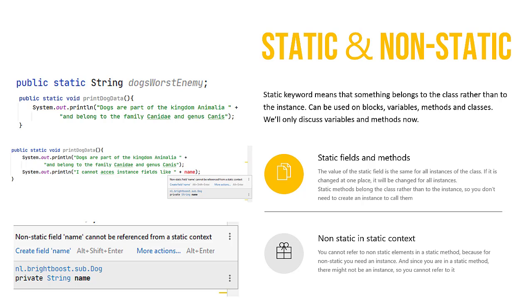We will only discuss the methods and the variables here. A static field means that the value of this field is the same for all instances of this class — so if it changes in one place, it's changed for all instances. A static method is very similar: it means the method belongs to the class rather than to the instance, so you don't need an instance to call it.